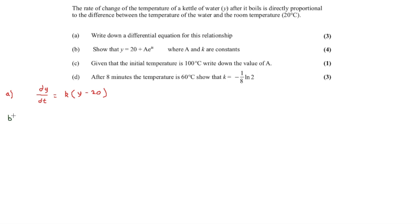In part B, we need to show that y equals 20 plus a e to the kt, where a and k are constants. We separate variables: dy equals k times y minus 20 times dt. Dividing everything by y minus 20 gives 1 over y minus 20 dy equals k dt.